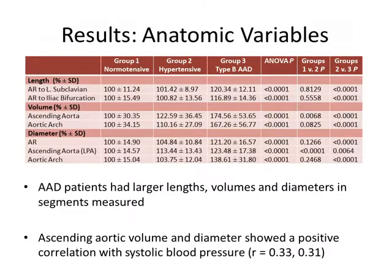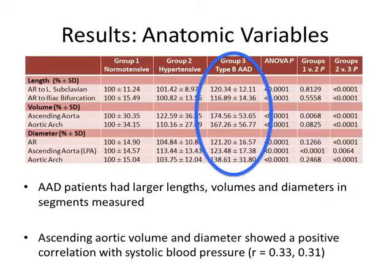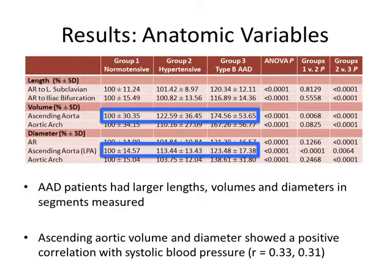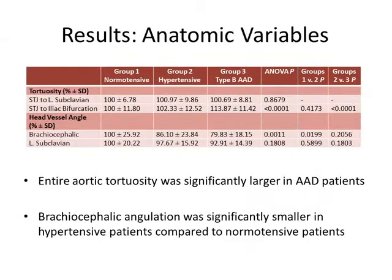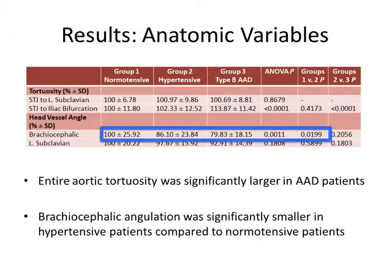Next, we assessed anatomic variables in which we compared AAD and hypertensive measurements to normotensive patients, normalized to 100%. AAD patients had larger lengths, volumes, and diameters in the segments measured — essentially, they had larger aortas in general. In addition, the ascending aortic volume and diameter showed a positive correlation with systolic blood pressure, so as systolic blood pressure increased, so did these volumes and diameters. Entire aortic tortuosity was larger in AAD patients, and brachiocephalic angulation was smaller in hypertensive patients compared to normotensive patients.